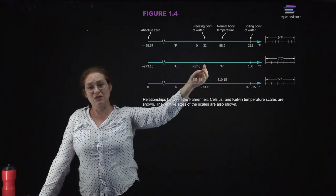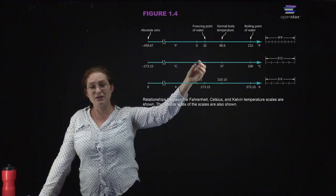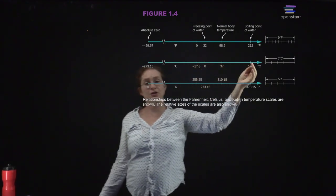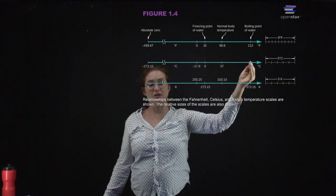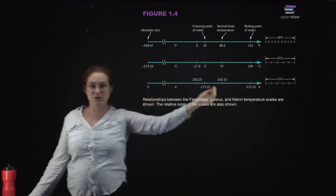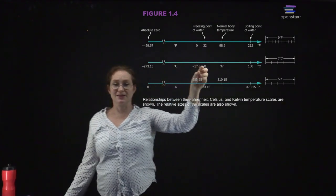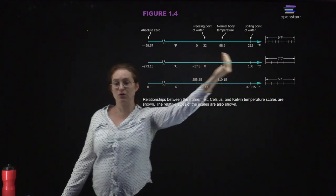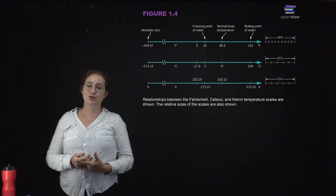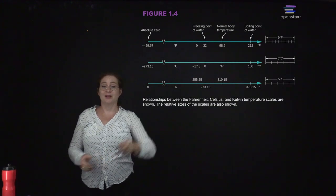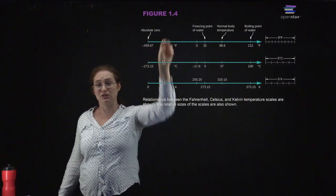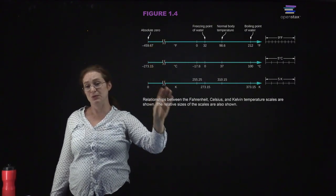In Celsius, zero degrees is the point at which ice melts and becomes water, and 100 degrees Celsius is the point at which water boils and becomes steam. So the zero and the 100 degrees Celsius are set at very specific physical points. We often also use the temperature scale Kelvin. Fahrenheit and Celsius are measured in degrees, but it's simply Kelvin — not degrees Kelvin.